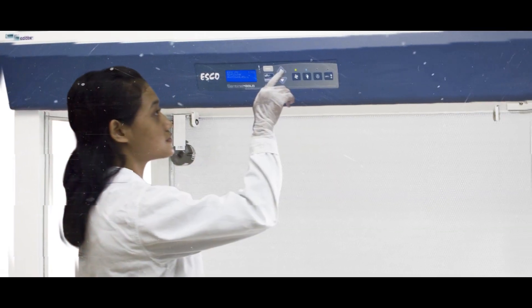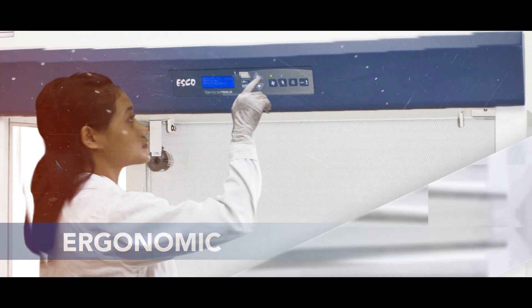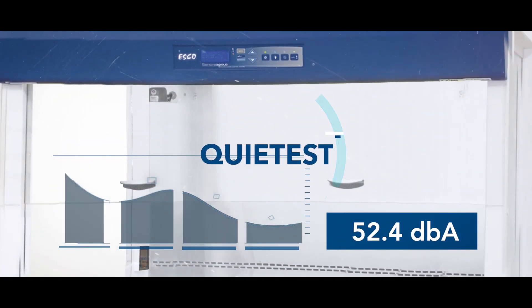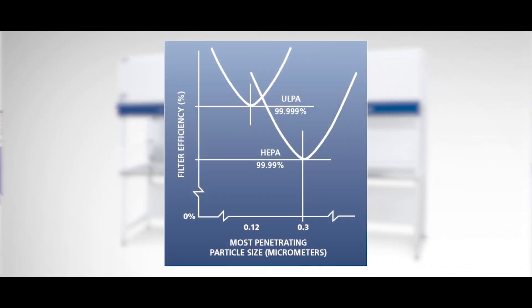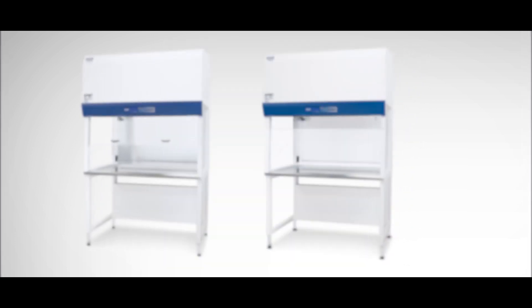Esco Airstream is designed to be the most ergonomic and quietest laminar flow cabinet in the market. The cabinet provides an ISO Class 3 work zone and is equipped with a ULPA or H14 filter that is 10 times better than the usual HEPA filter in most competitors.